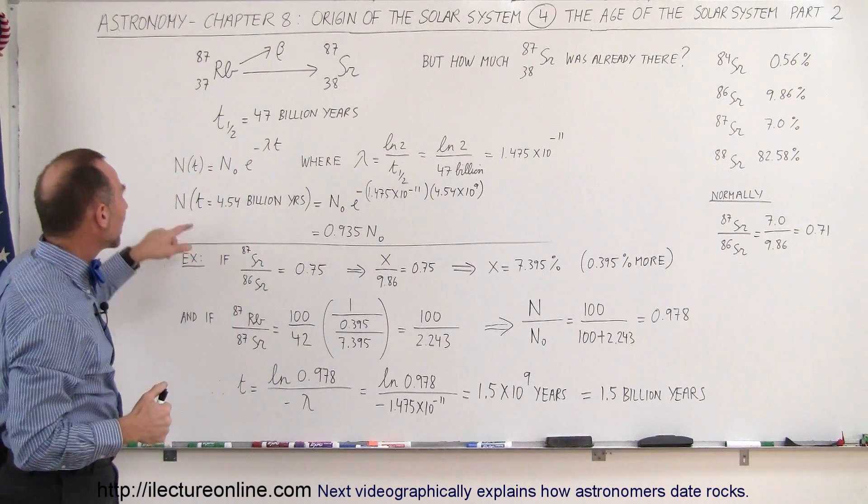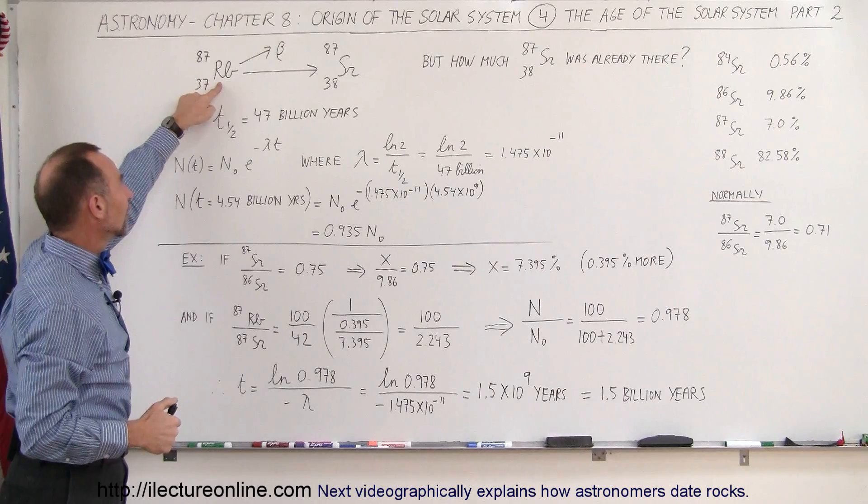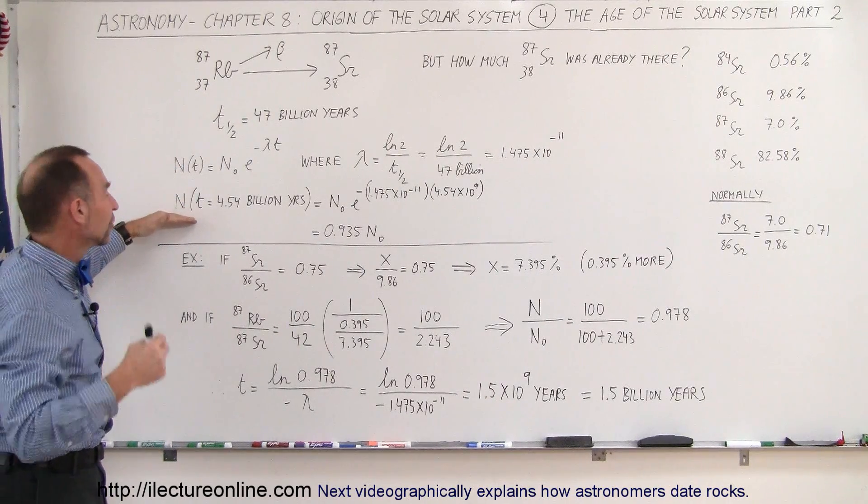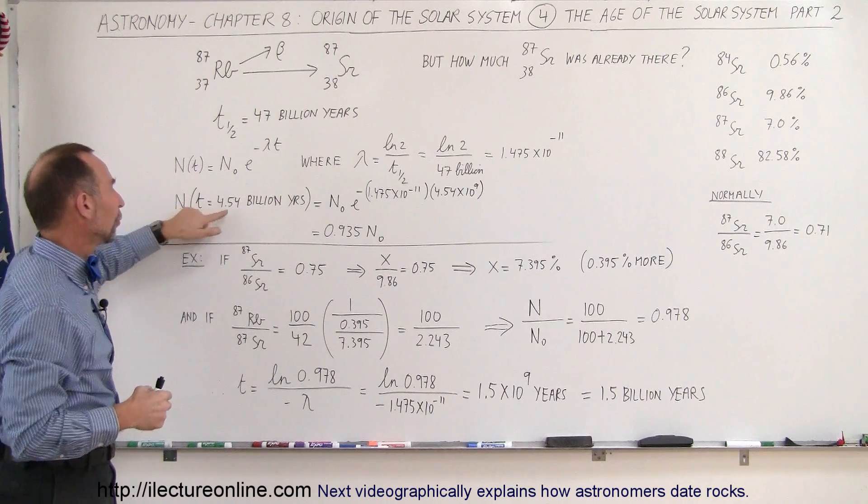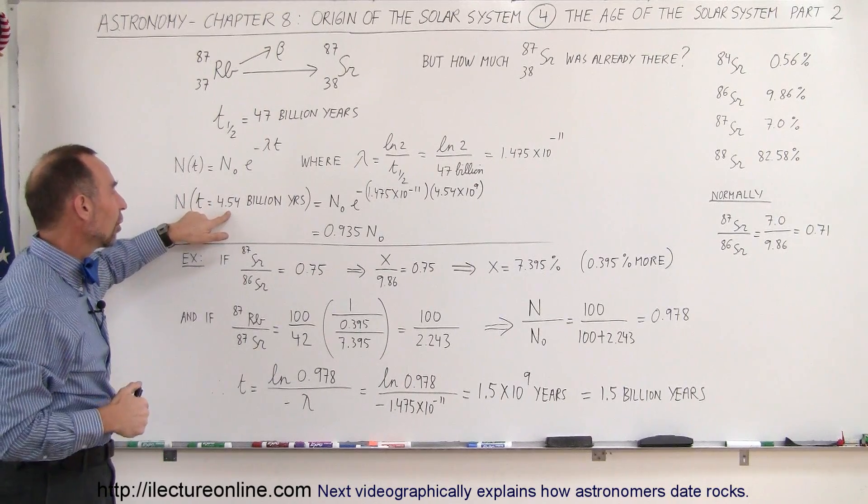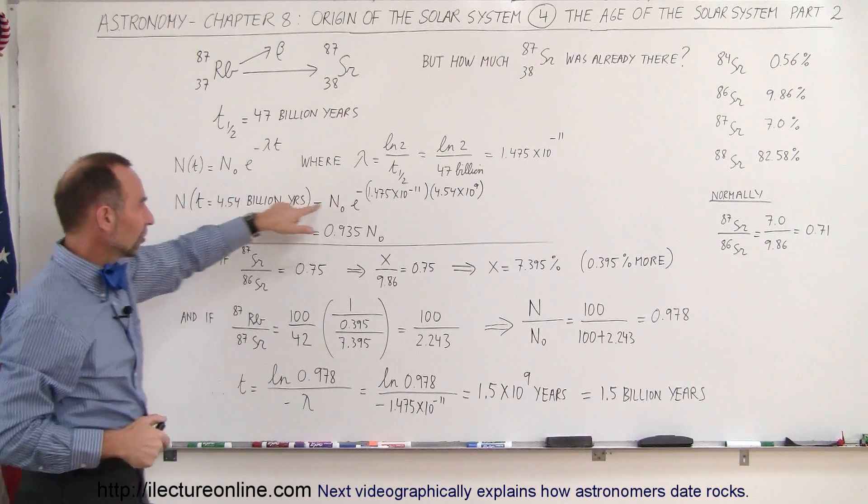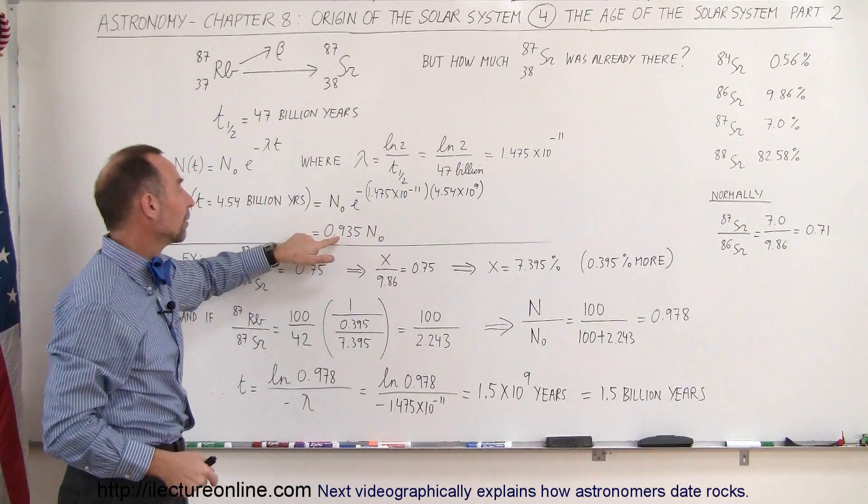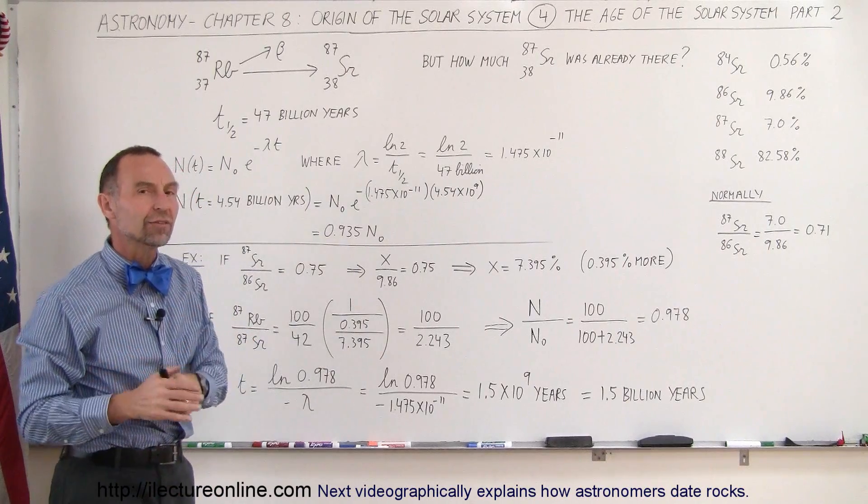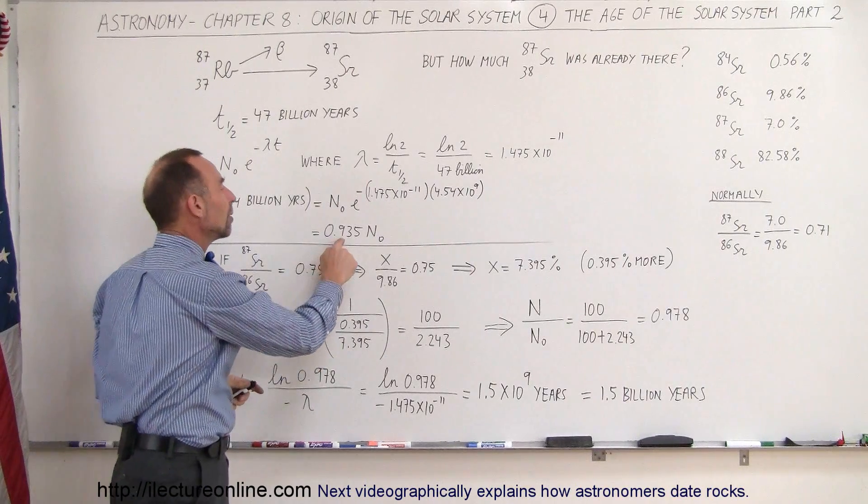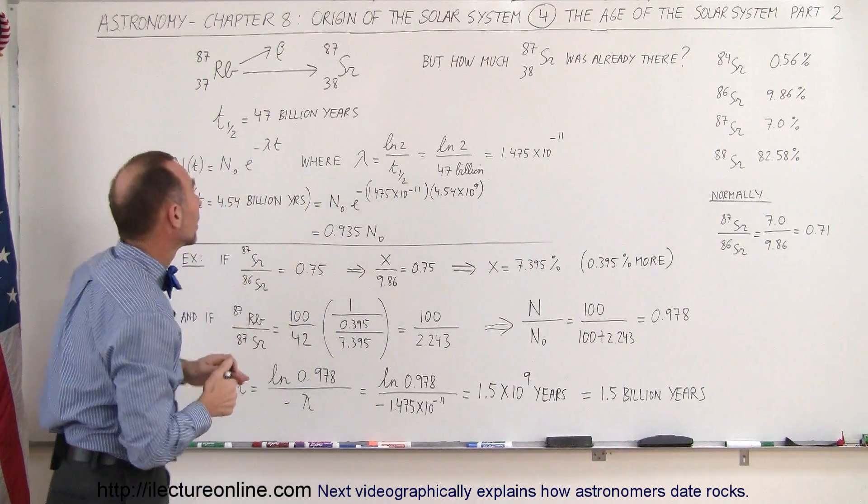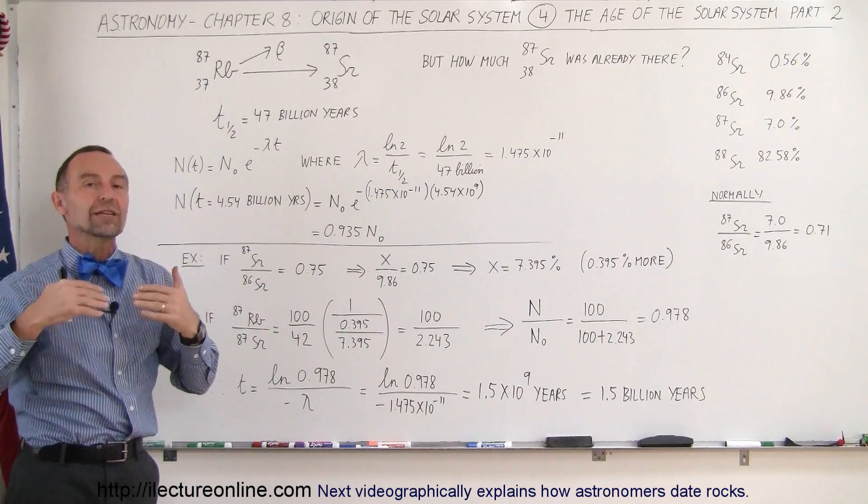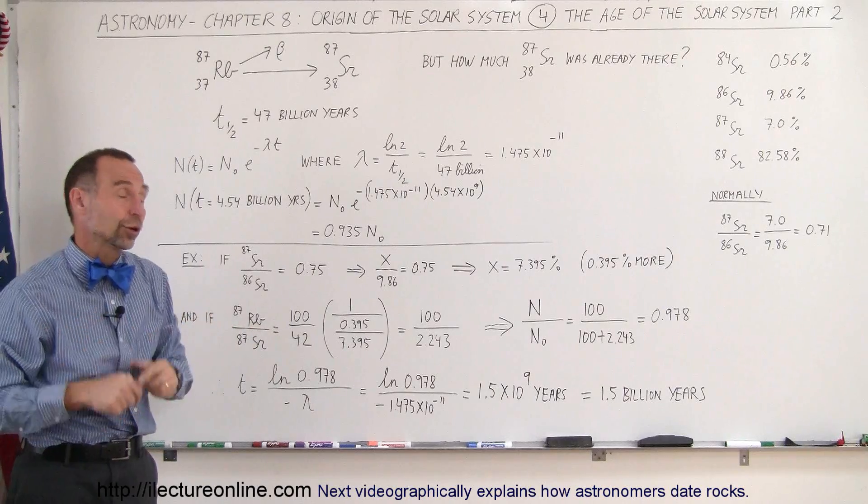So what will be the amount of Rubidium left if we find a rock that was formed at the very beginning of the formation of the solar system, 4.54 billion years ago? And then we can say that if we use this equation, we plug in lambda, we plug in 4.54 billion years, so we end up with 0.935, which means that today, 93.5% of Rubidium should be left if it had 100% at the beginning of the formation of the solar system, which is when the Earth was formed.